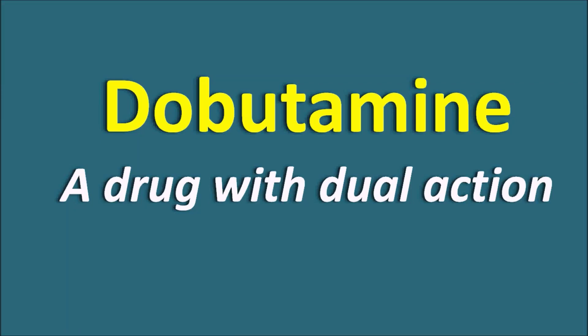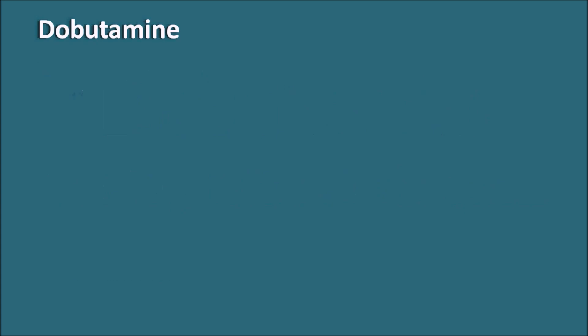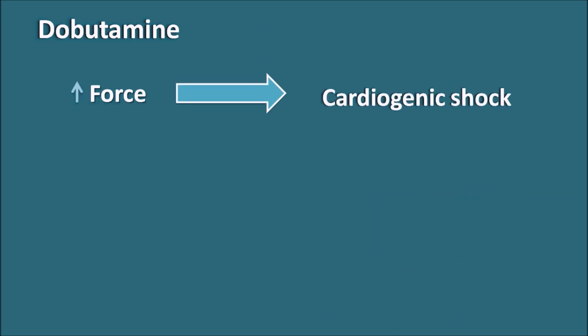Dobutamine is a drug with dual action. It is one of the drugs which increases the force of contraction, so it increases the inotropic activity. That's why this drug can be used in the treatment of cardiogenic shock.